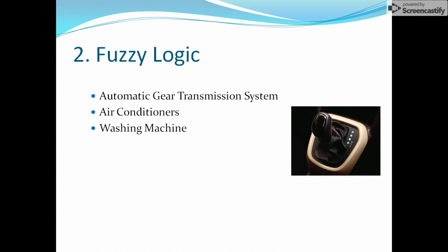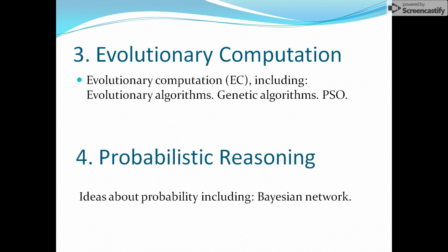Fuzzy logic is another component — examples include automatic gear transmission systems, air conditioners, and washing machines. We implement fuzzy logic in a soft computing way that is not completely precise but gives the best result. Evolutionary computations are inspired by how different species, insects, animals, and birds work — how they collect food, find prey, and hunt. Genetic algorithms are a basic part of soft computing. Probabilistic reasoning involves probability, such as Bayesian networks.